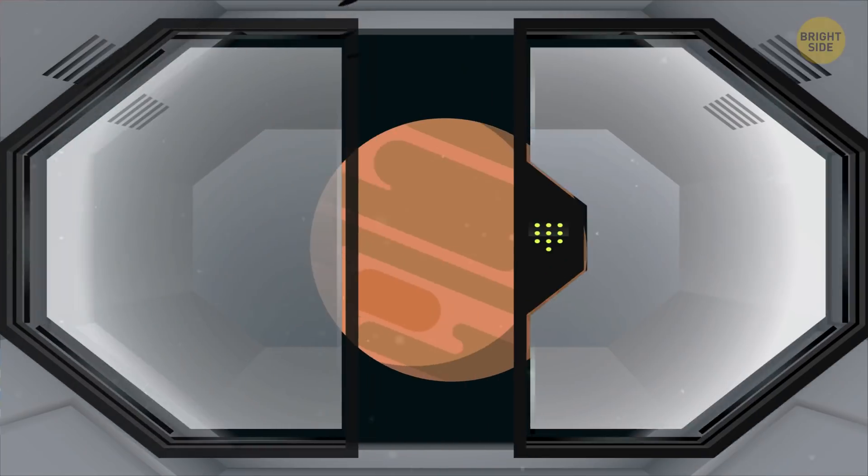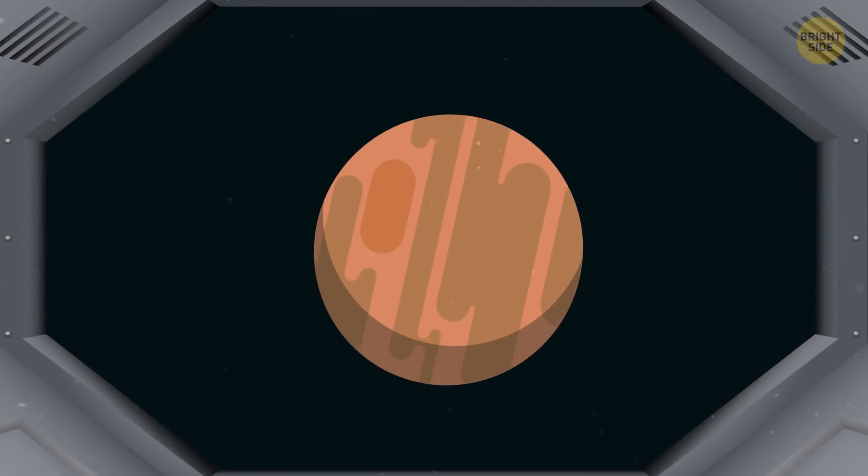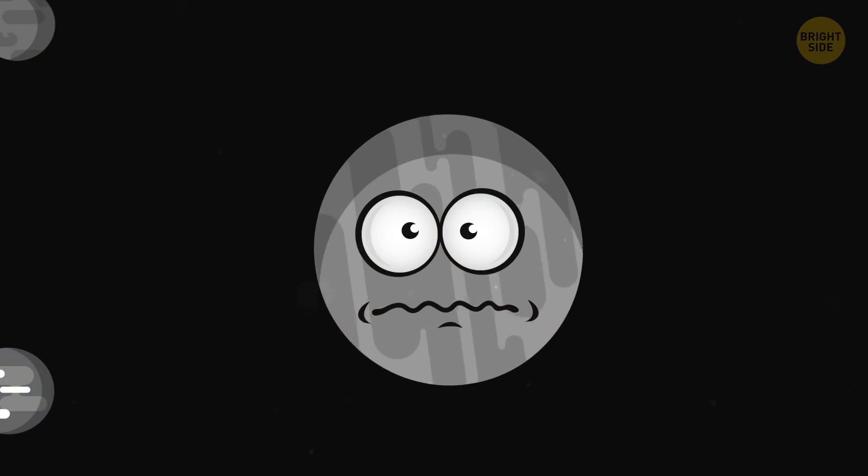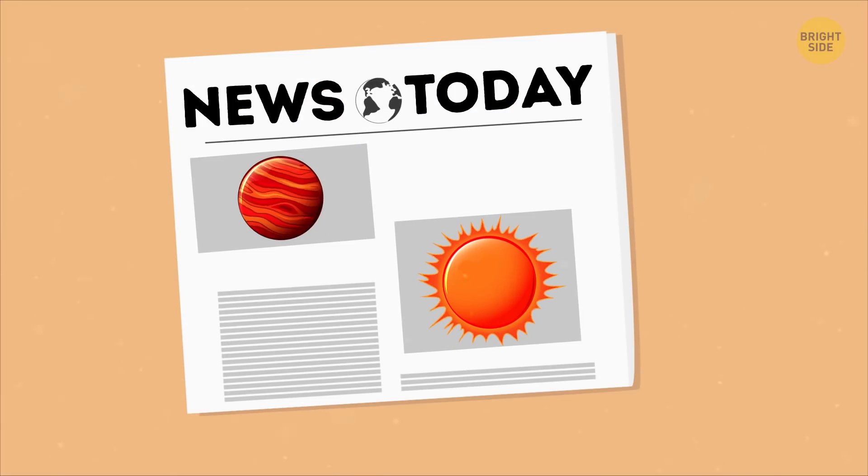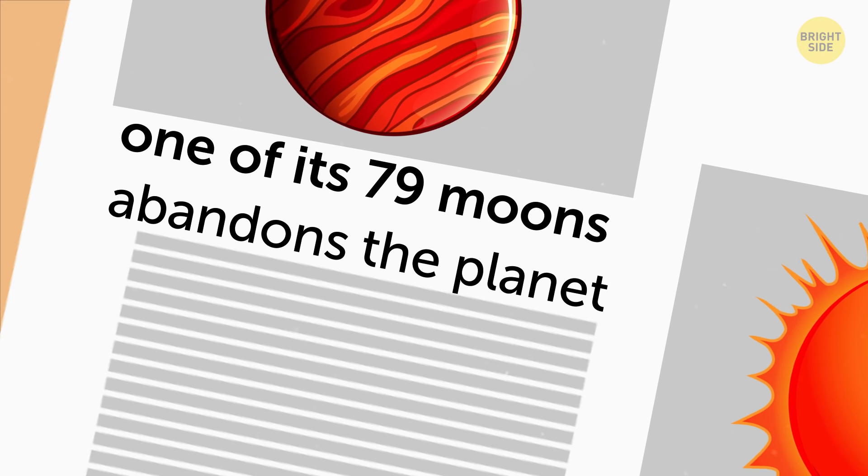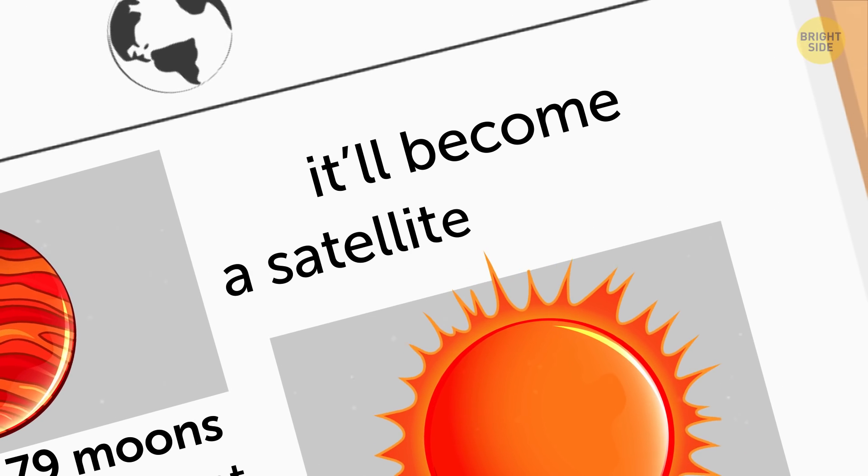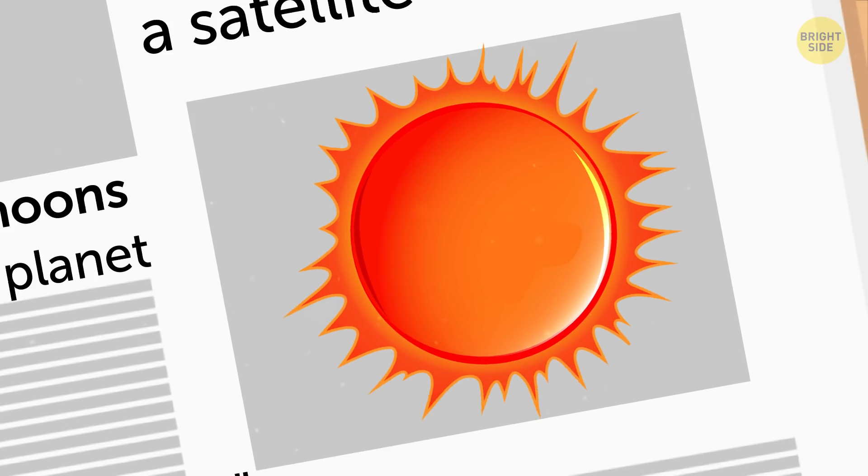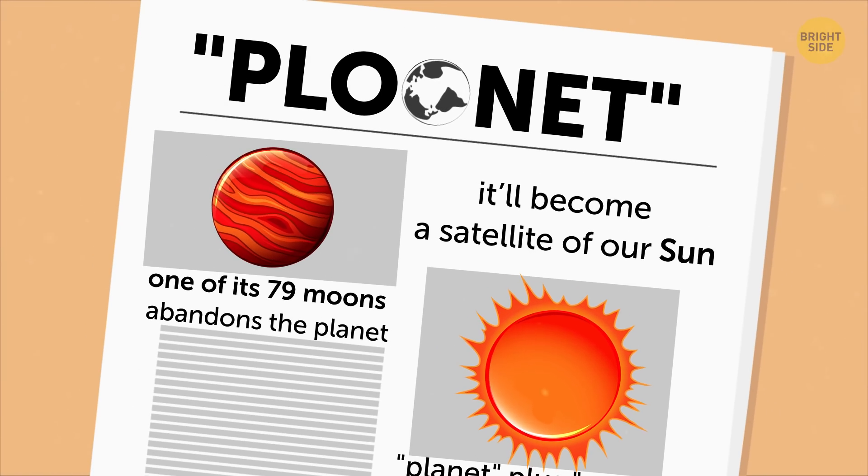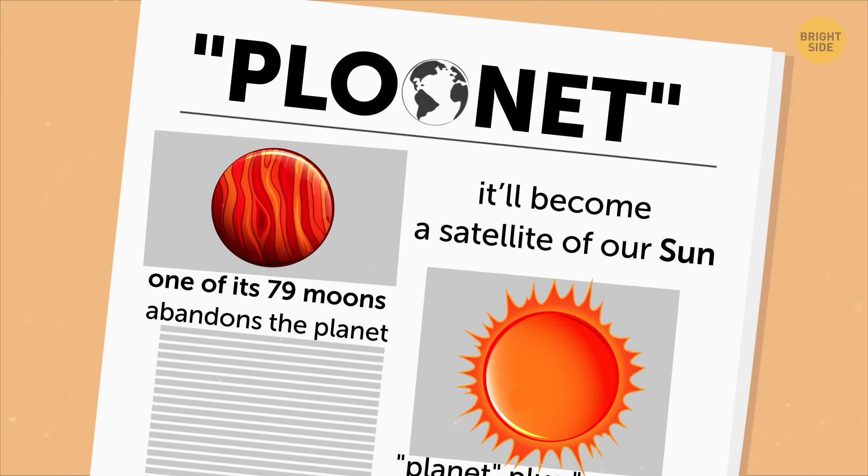For example, let's take Jupiter, a gas giant of our solar system. If one day one of its 79 moons abandons the planet, it'll become a satellite of our Sun. Hence the name, planet, its new position, plus moon, what it used to be, gives us a Plunet. Some linguistic addition, if you will.